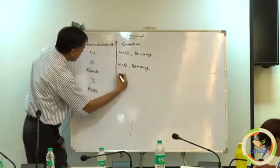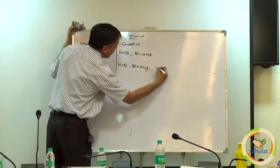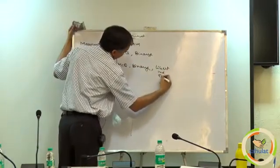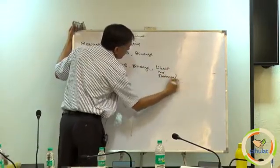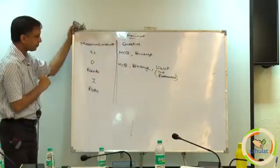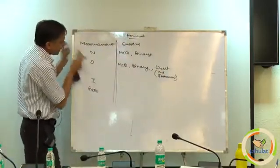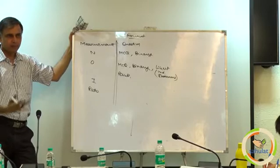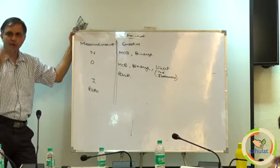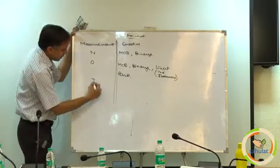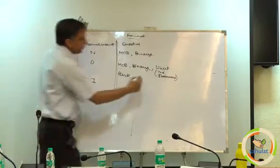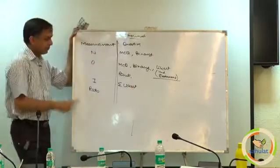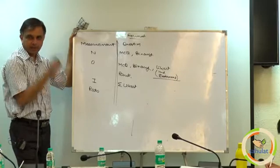Then we have just said Likert is ordinal. The individual statement of Likert is ordinal. Ranking question is also ordinal — the person already gives rank 1, 2, 3, 4. For interval: in the case of Likert, we always go for summation of Likert — that is interval.